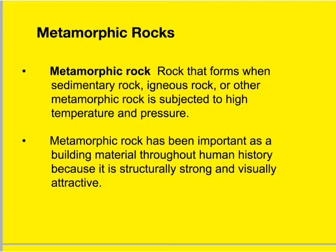Metamorphic rocks are formed when sedimentary rocks, igneous rocks, and even other metamorphic rocks are subjected to high temperatures and pressure. These pressures cause profound physical and chemical changes in the rock, and can be exerted by overlaying rock layers, tectonic processes, or continental collisions — anything that causes extreme pressure or distortion. Metamorphic rock includes things like slate, marble, and different types of coal. Just from that list alone, you can see this type of rock has had a real big impact on human activity and civilization — we basically make our houses, countertops, and heat our homes with this type of rock.